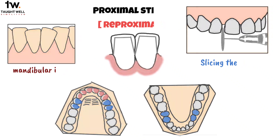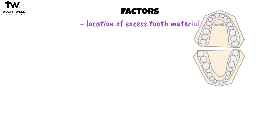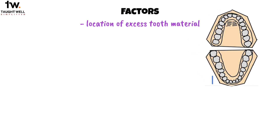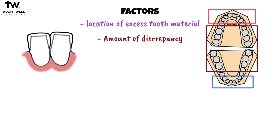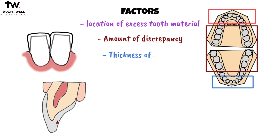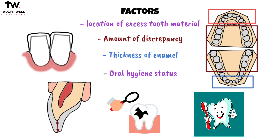The teeth chosen for proximal stripping depend on a few factors. First is the location of excess tooth material: the mandibular anterior segment, the maxillary anterior segment, or the mandibular or maxillary posterior segments. The second is the amount of discrepancy. Next is the thickness of enamel present on the teeth of the region. And finally, the caries or oral hygiene status of the patient.